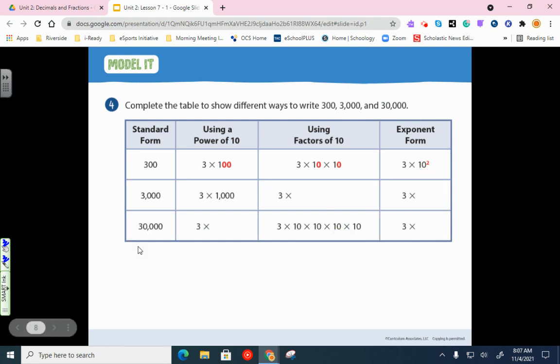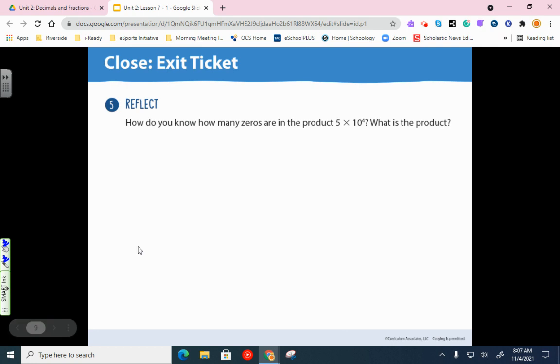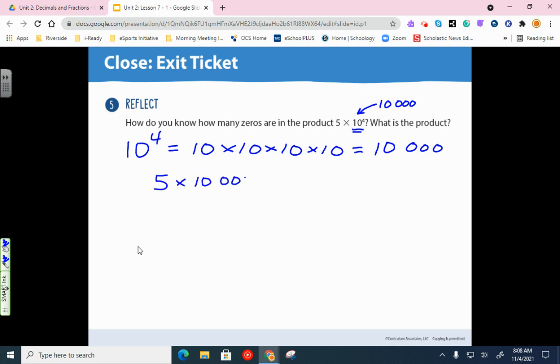And let's work on this last question. How do you know how many 0s are in the product? 5 times 10 to the fourth, what is the product? So, this is the key right here, this exponent. Because we know now that 10 to the fourth equals 10 times 10 times 10 times 10. So, we know that much. We also know that equals 10,000. So, this part right here, that's worth 10,000. And then this 5 times that number, you know, 5 times 10,000 equals 50,000. So, we know that there are four 0s in that answer. And that's how we get a lot of those. And, again, you are now experts in exponents.